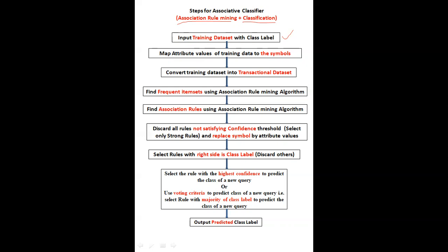For example, if you consider the training dataset for the electronic shop store — for predicting whether the customer will buy a computer or not — the income attribute will have values high, medium, and low. Instead of taking these attribute values as-is, we can convert these values into symbols, that is A, B, C. We then convert these attribute values with symbols into the transactional dataset. The next step is to convert this training dataset of symbols into the transactional dataset, because first we apply association rule mining or the Apriori algorithm to find the rules, which we will use to predict the class of the new query.